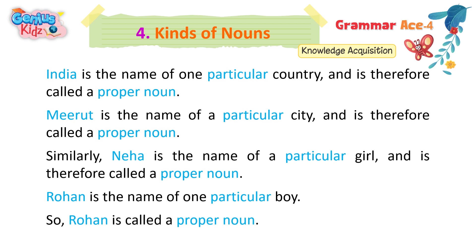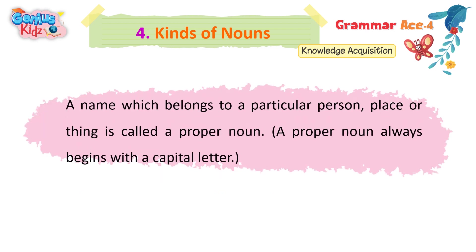India is the name of one particular country and is therefore called a proper noun. Meerut is the name of a particular city and is therefore called a proper noun. Neha is the name of a particular girl and is therefore called a proper noun. Rohan is the name of one particular boy — a particular person, place, or thing is called a proper noun.